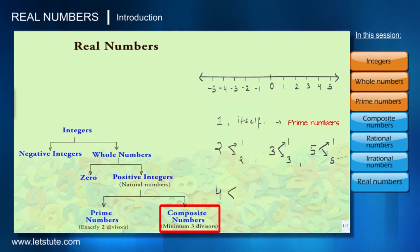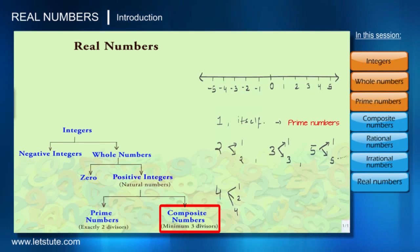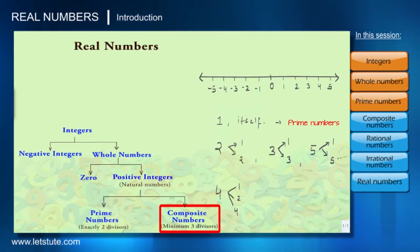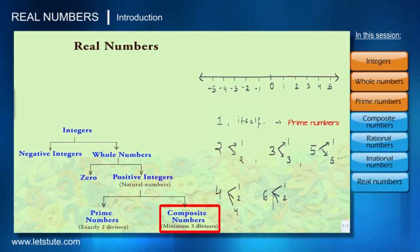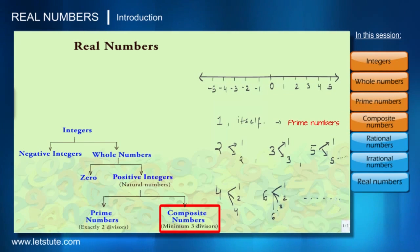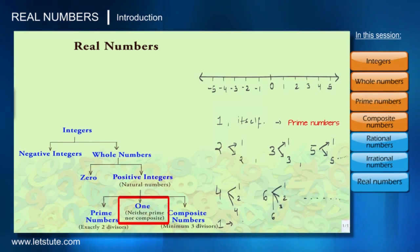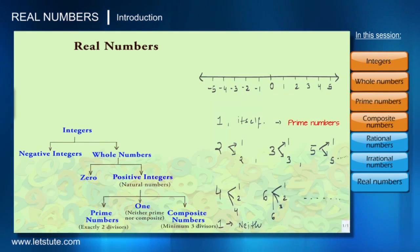Composite numbers are numbers which have at least three divisors or more. For example, 4 has three divisors: 1, 2, and 4 — meaning 4 can be divided by 1, 2, and 4. Similarly, 6 has four divisors: 1, 2, 3, and 6 itself. So they are all composite numbers. We also know that the number 1 is the only number which has only one divisor, so 1 is neither prime nor composite.